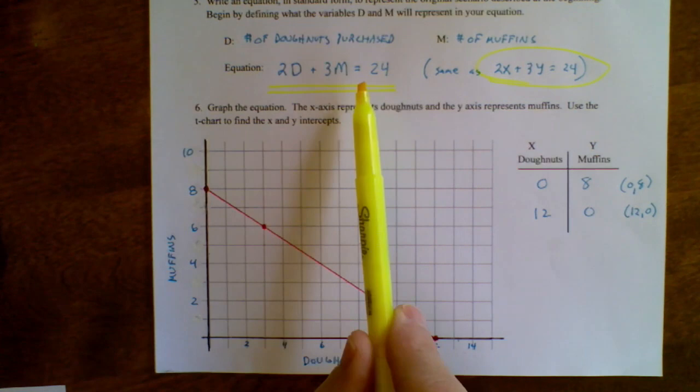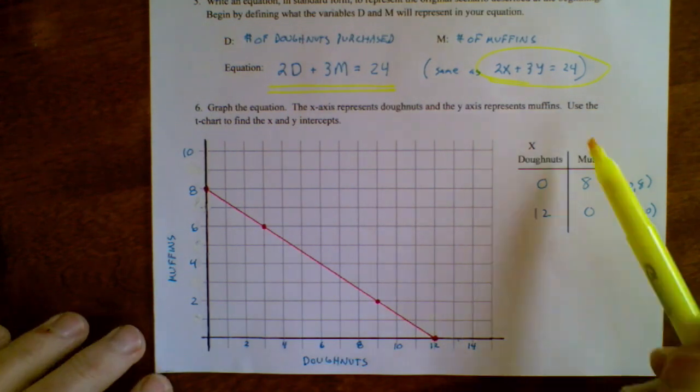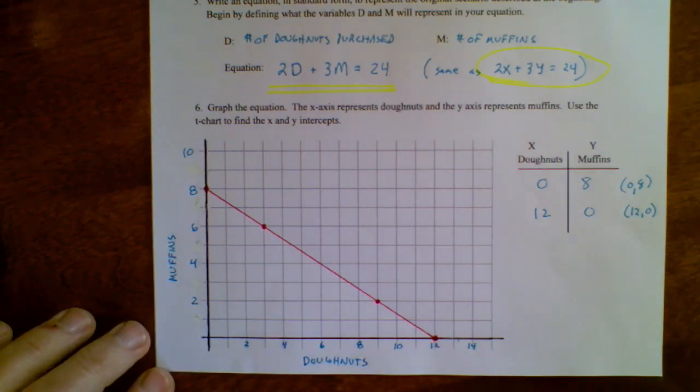Once you have your equation, whether you're using x's, y's, or D's and M's, now the procedure is the same as before. I would go ahead and make a t-chart to find the intercepts.